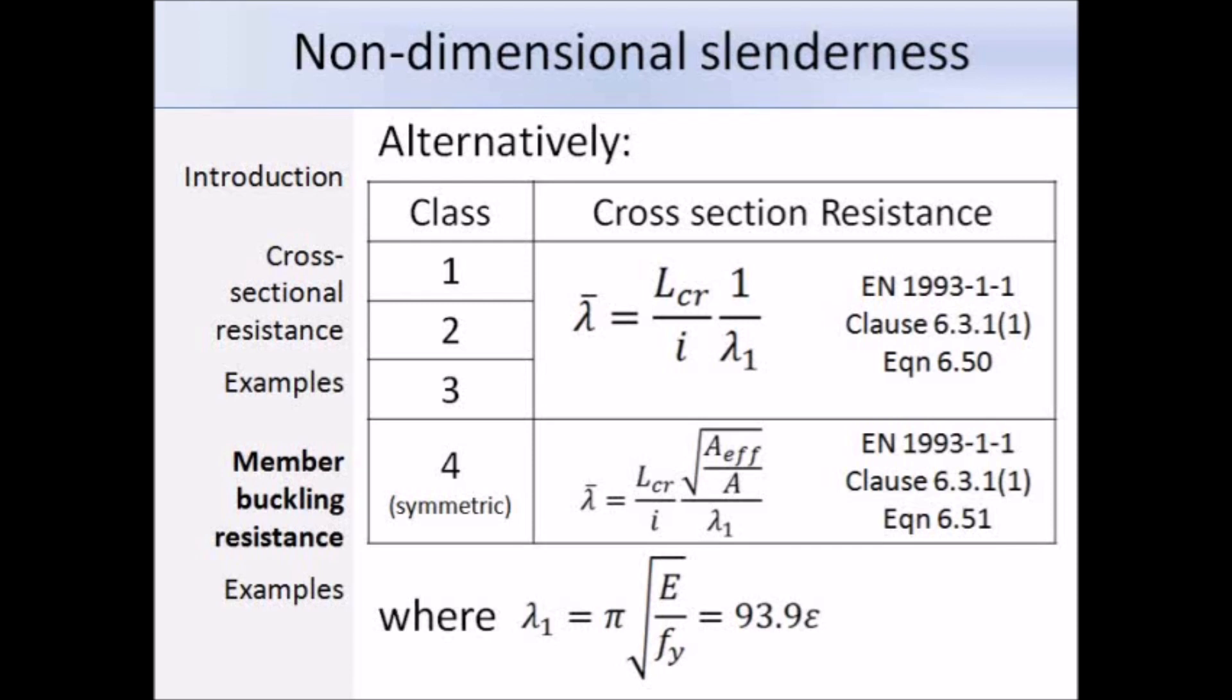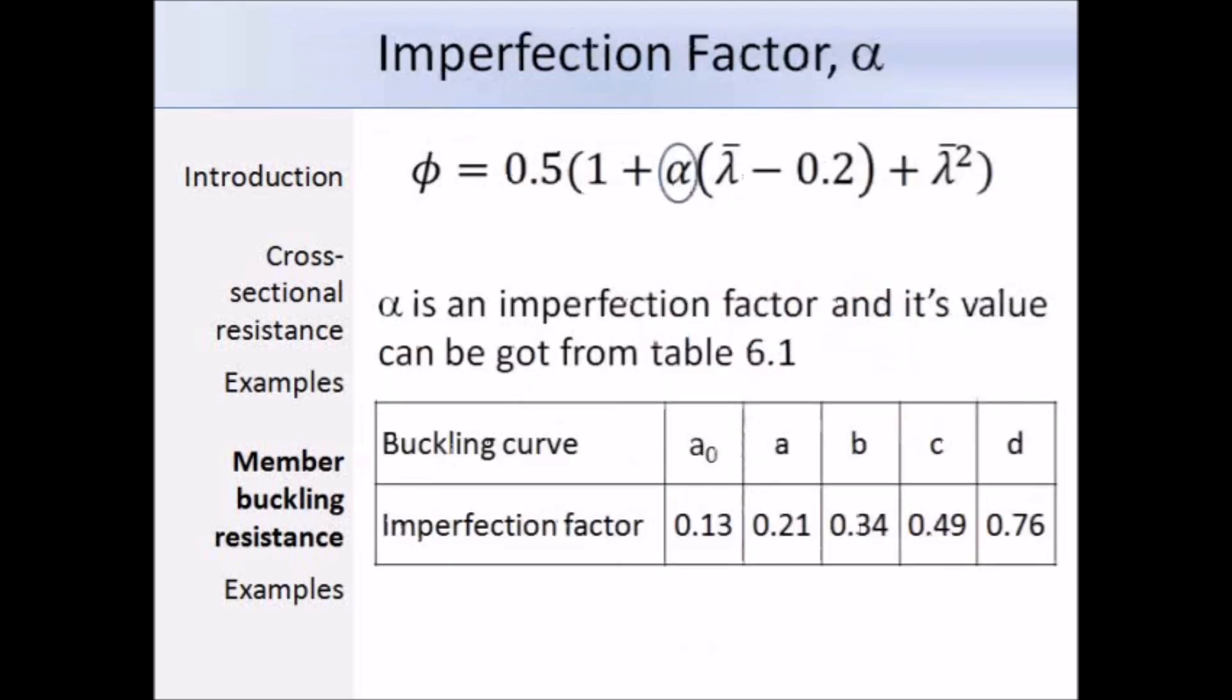In order to work out phi, we need to know the value of alpha, and that will depend on the buckling curve you will be using. We can determine the appropriate buckling curve from table 6.2 and then refer to table 6.1 to get the corresponding value of alpha. The imperfection factor alpha depends on the shape of the column cross section, the direction in which buckling can occur, and the fabrication process used.